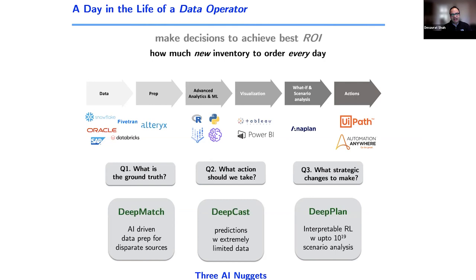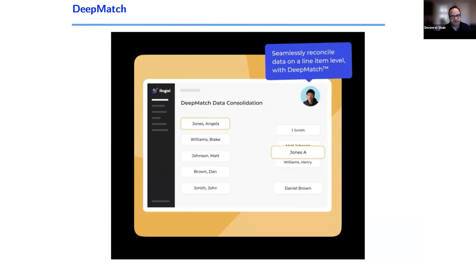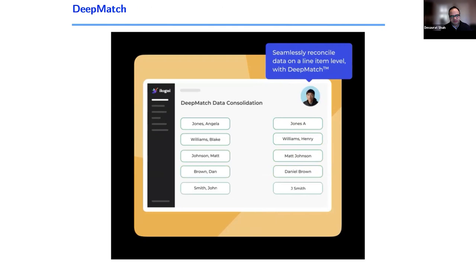These three nuggets enable an end-to-end no-code platform. I want to show you how that can solve this simple problem of deciding how to order inventory day-to-day in one place. Let me give you a cartoon-like example of what DeepMatch is doing.